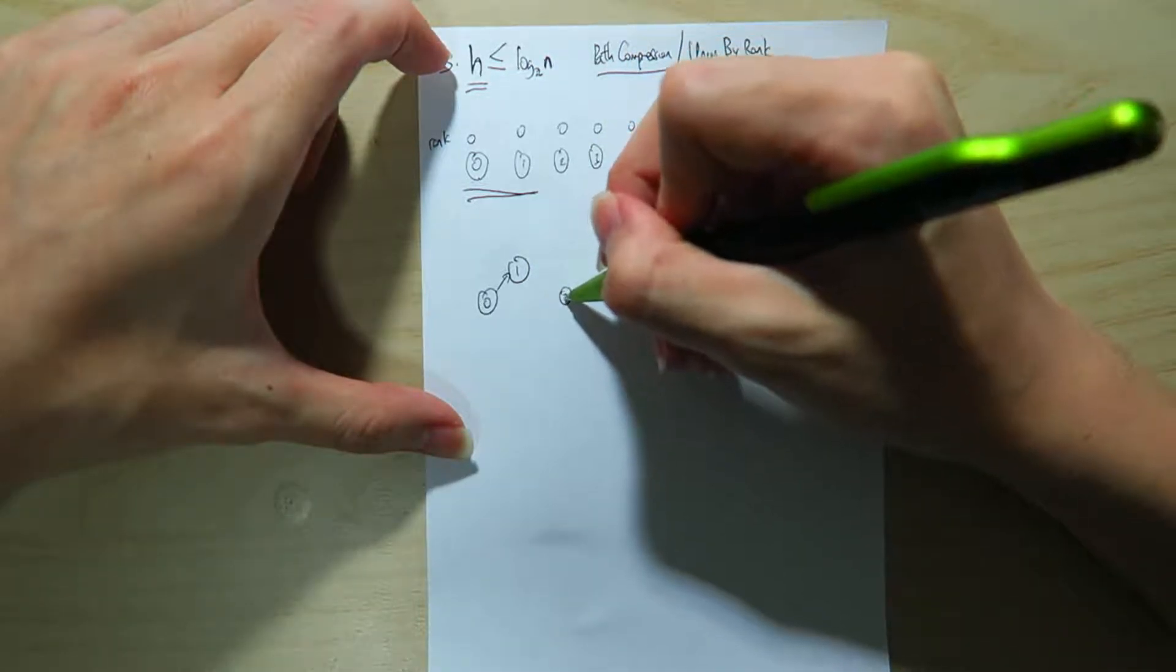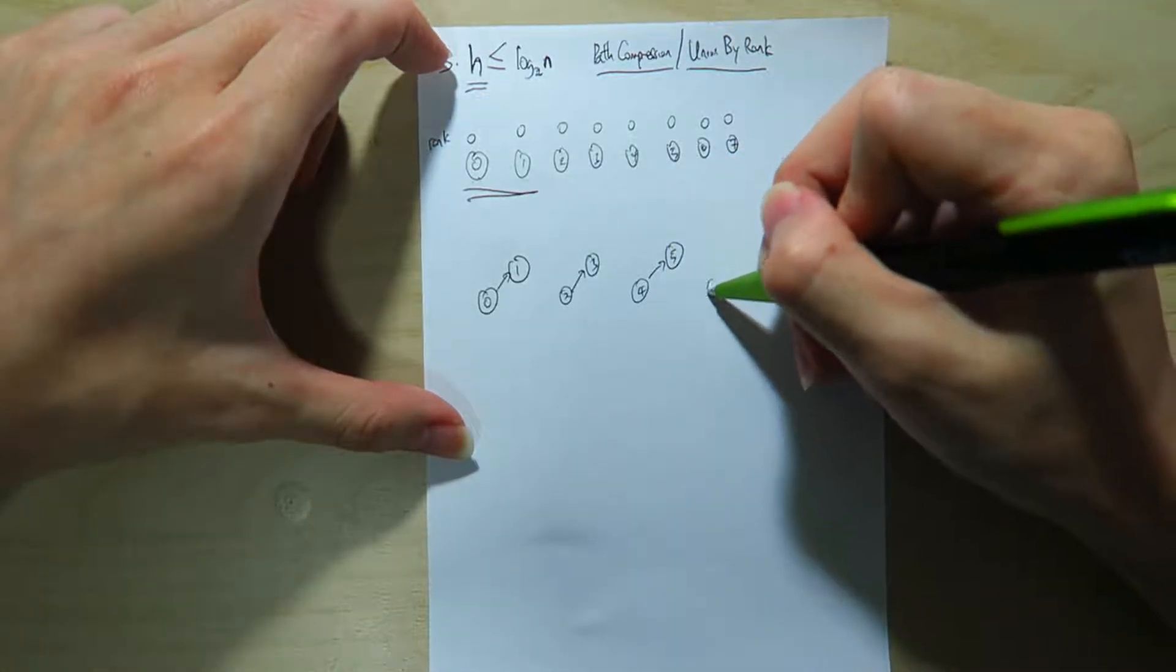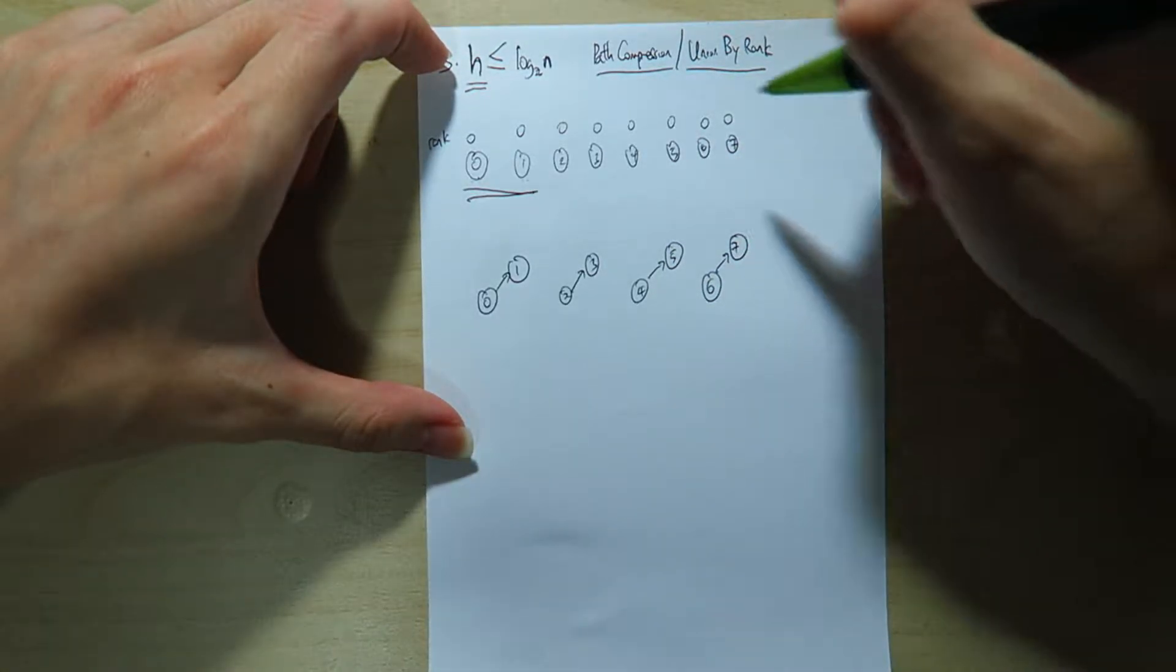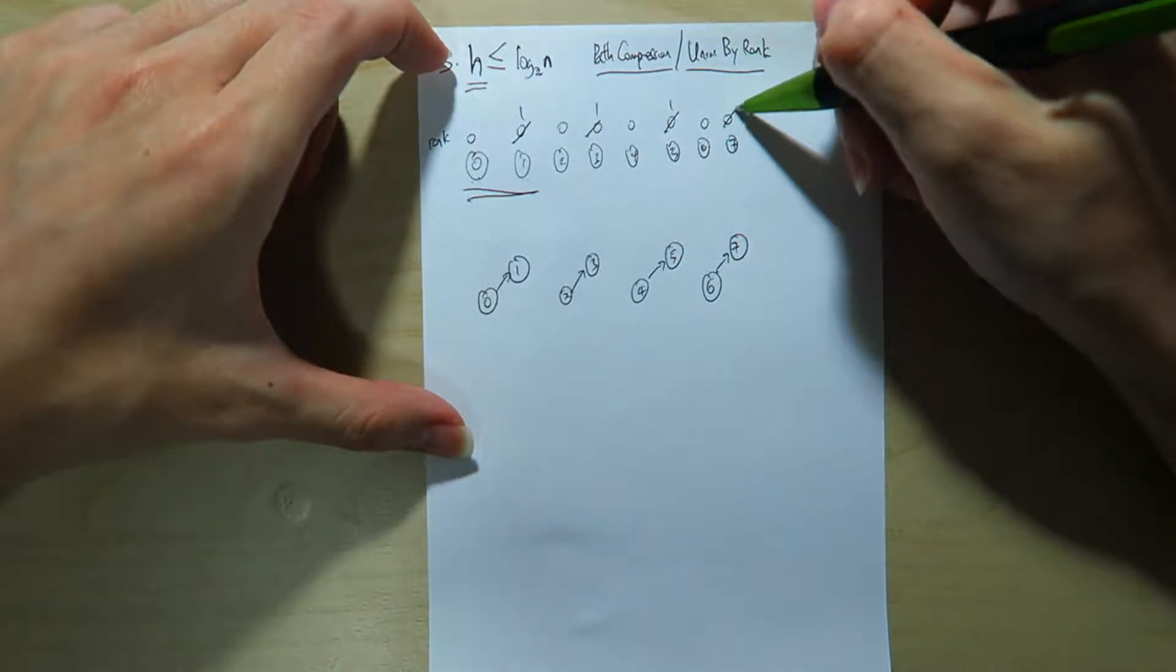So similarly, we're going to union 2 and 3, union 4 and 5, union 6 and 7, right? So we're going to update the rank of 1 to this 1, 1, 1, right?